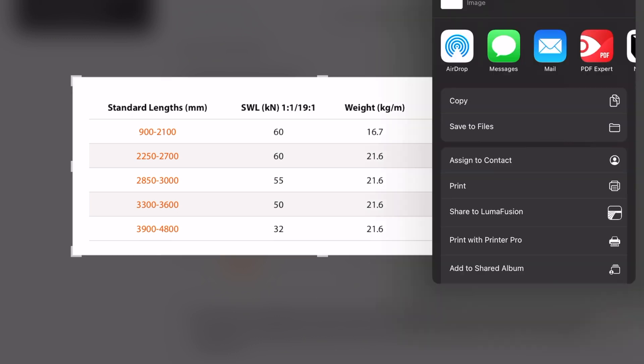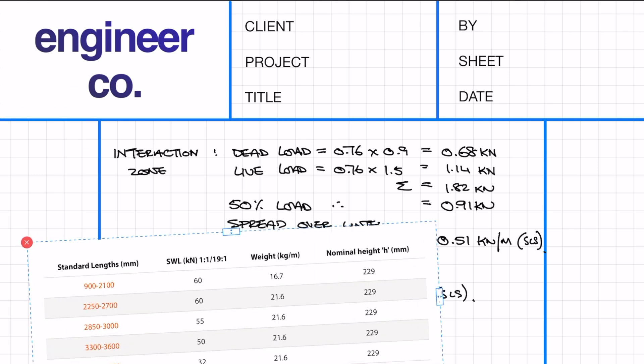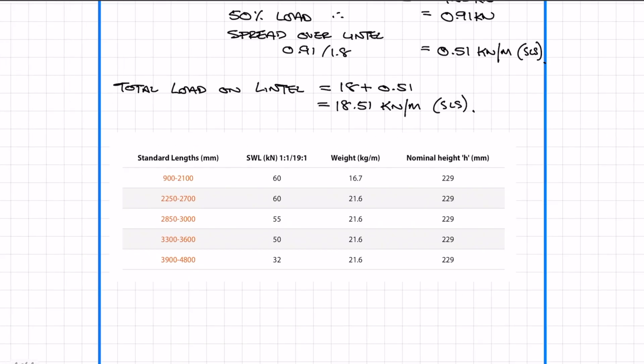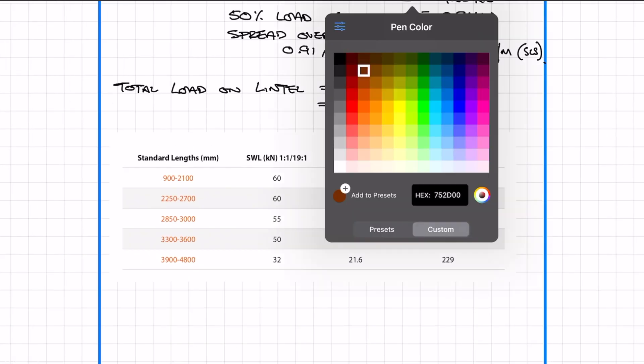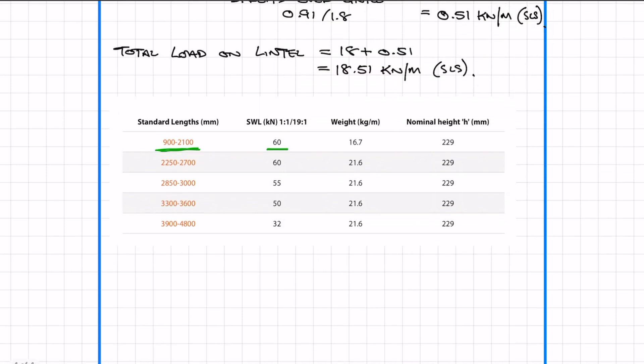It's good practice to copy the load span table into your calculation page. So we need to check that the safe working load is appropriate for the length of our lintel. We know that our lintel is spanning over an opening of 1.8 meters. Therefore we need to check against the safe working value of 60 kN. What we calculated earlier was the load in kN per meter so all we need to do is multiply by the length of the lintel to get the total load in kN. So we get a total load of 33 kN which is obviously less than 60. Therefore this lintel works.